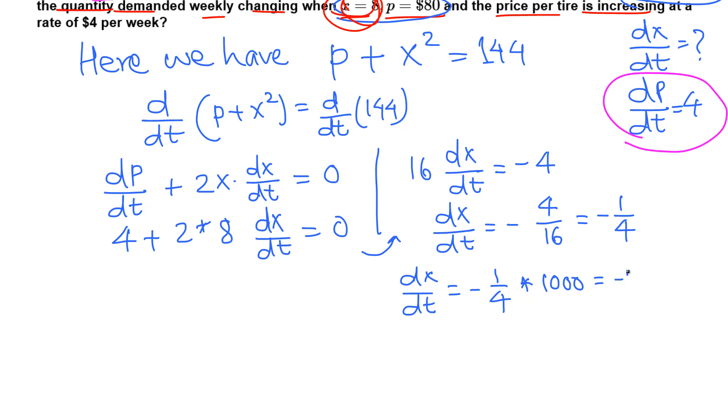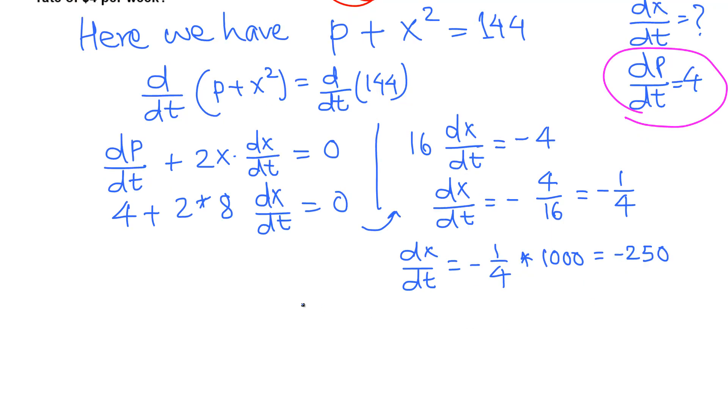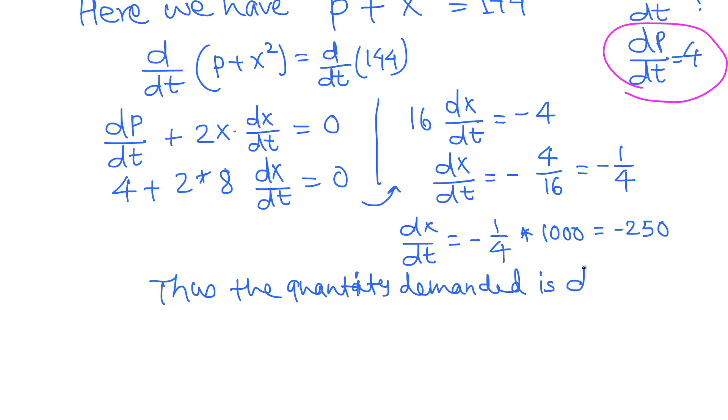That means thus the final answer: we write in this way, the quantity demanded, quantity demanded for the tire, is decreasing because of the negative sign. Okay, decreasing how many? 250 tires. And thus per some time, and thus per week. That's in the question, it is given weekly. Final.